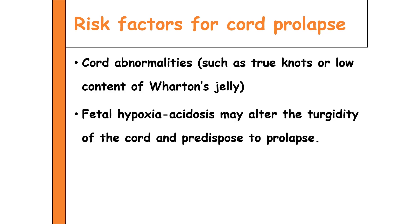Cord abnormalities such as knots in the umbilical cord or a low amount of Wharton's jelly may also lead to cord prolapse. Fetal hypoxia and acidosis may alter the turgidity of the cord — reducing its contractile and mobility capacity — and predispose it to prolapse.